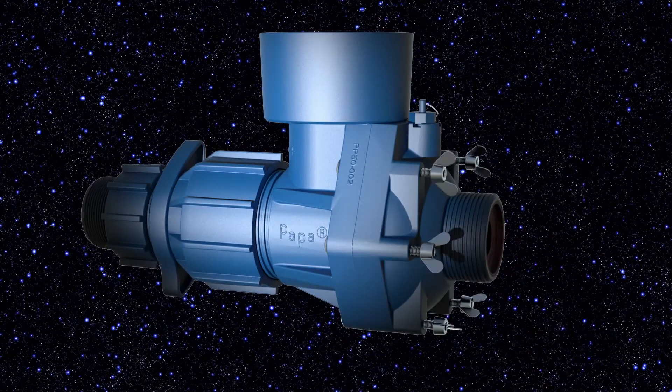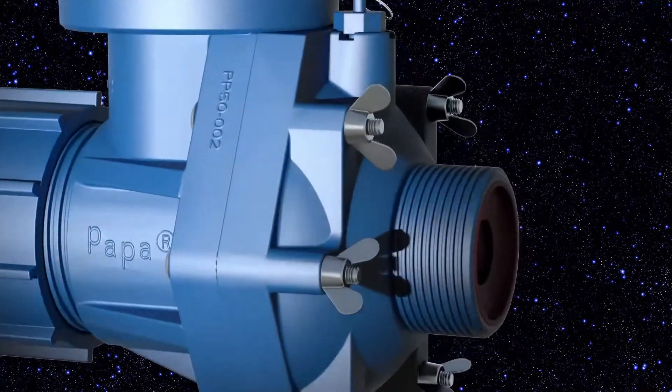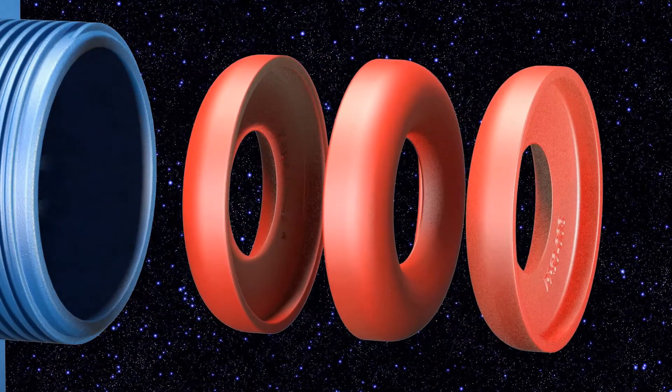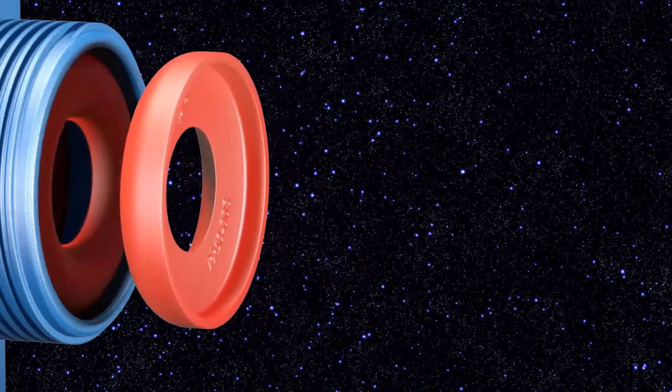These pulses are then directed in line through a second Venturi check valve where the water can be delivered to great heights and over long distances.